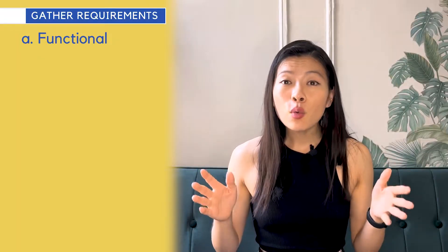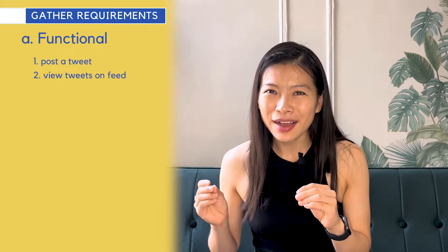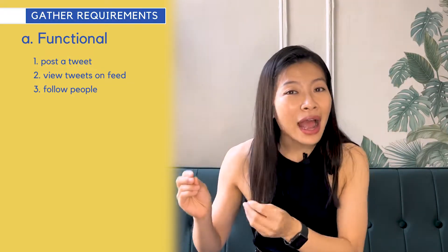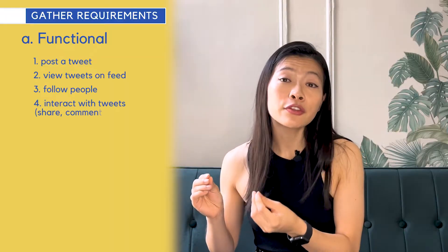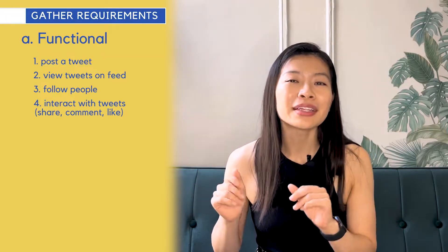For Twitter, you'll want to build a service that enables people to post a tweet, to view tweets on their timeline, to follow people so they get tweets on their timeline, and also to interact with each individual tweet — like liking it, sharing it, and commenting on it. Those are the four things I'm thinking about when gathering the functional requirements.